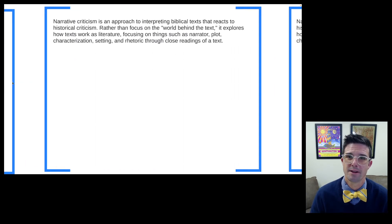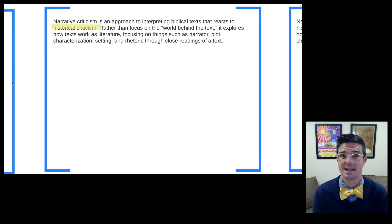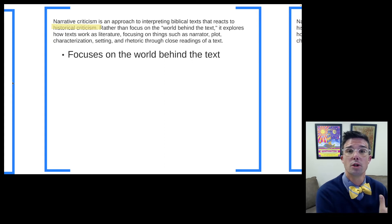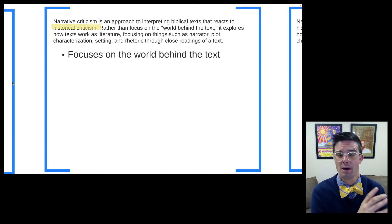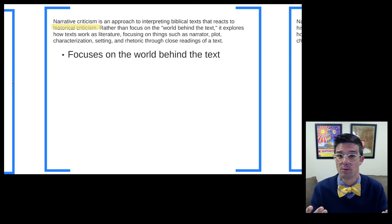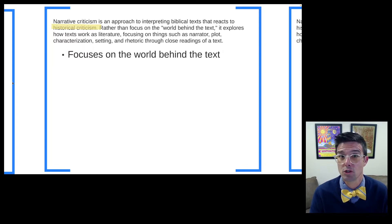Historical criticism, as we've talked about when discussing the world behind the text, had its heyday really in the 18th, 19th, and 20th centuries. It is a way of interpreting the biblical text that focuses on the world behind the text — the history, the culture, and how the text came to be. Of course, the world behind the text is still a very important part of the interpretive process, and thinking about these issues is part and parcel of what we do in interpretation.